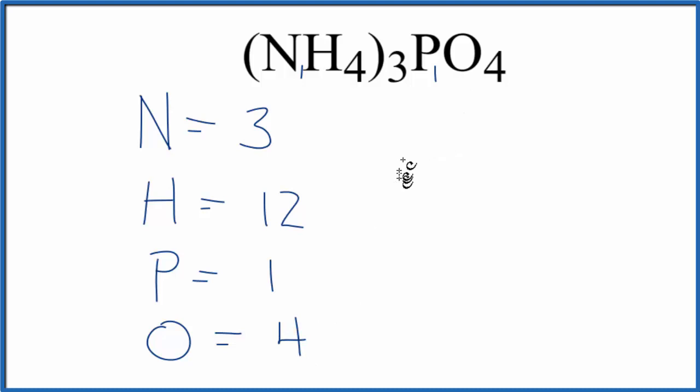If we wanted to know the total number of atoms in NH43PO4, this ammonium phosphate, we just add all these up. So 4 plus 1 is 5, plus 12, 17, plus 3, 20 atoms in ammonium phosphate.